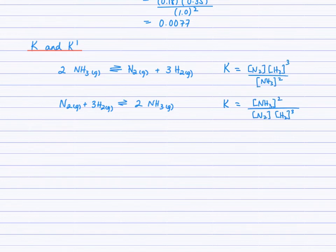I've written an expression for K of the first equation with products over reactants and the same for the second equation. So my question to you is, since these two equations are related and that one is the reverse of the other, perhaps these equations for K are related. Can you see a mathematical relationship between these two expressions? If we try to add them, well, we're adding fractions and they do not have a common denominator. Same with subtraction. What about multiplication?